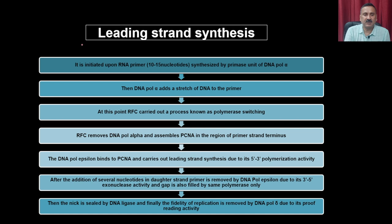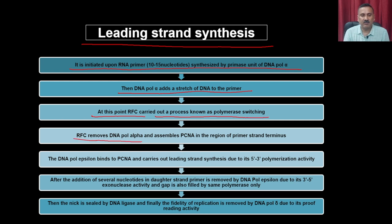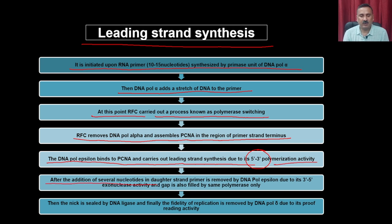In leading strand synthesis, replication is initiated upon RNA primer synthesis by the primase unit of DNA Pol alpha. DNA Pol alpha adds a stretch of DNA to the primer. Then RFC carries out polymerase switching — removing DNA Pol alpha and assembling PCNA at the region of the primer-strand terminus. DNA Pol epsilon binds to PCNA and carries out leading strand synthesis via its 5-prime to 3-prime polymerase activity. The RNA template strand is removed by DNA Pol epsilon's 3-prime to 5-prime exonuclease activity, the gap is filled, the nick is sealed by DNA ligase, and fidelity is ensured by DNA Pol delta's proofreading activity.